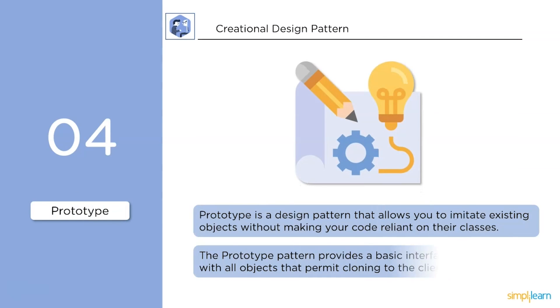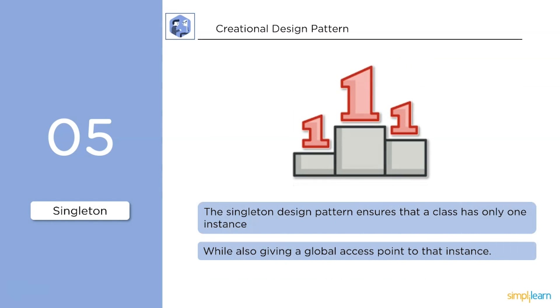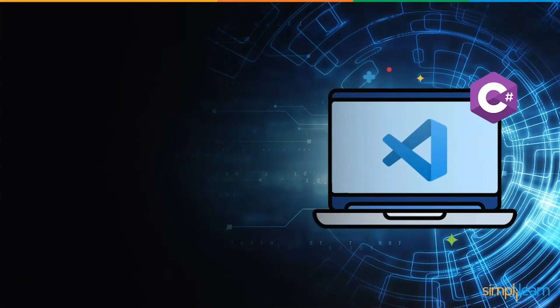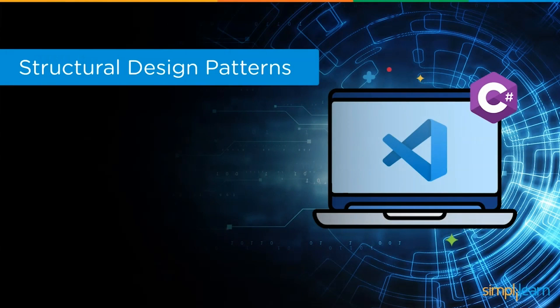The prototype pattern allows you to imitate existing objects without making your code dependent on their classes. It provides a basic interface for working with all objects that permits cloning to the client code. The singleton pattern ensures that the class has only one instance while also providing a global access point to that instance.